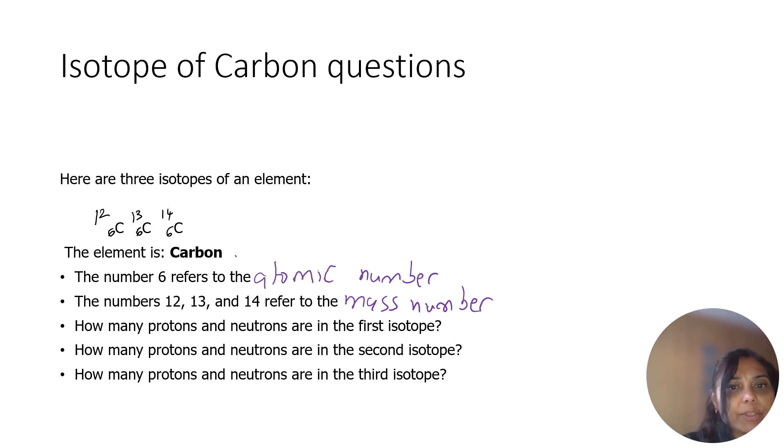How many protons and neutrons are in the first isotope? The answer is 12 because you have 6 protons and 6 neutrons. The second is 13: 6 protons and 7 neutrons. And the third is 14: 6 protons and 7 neutrons.